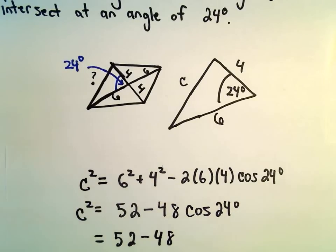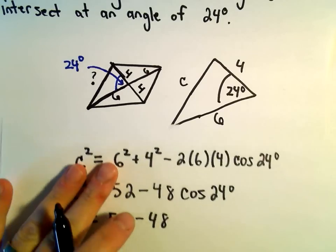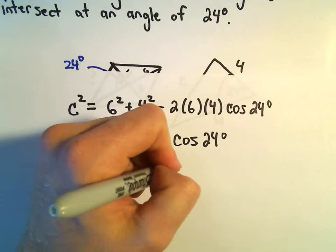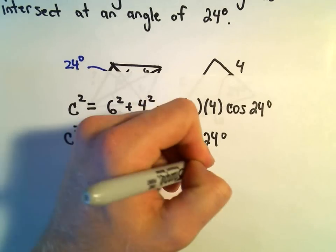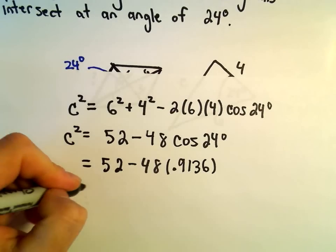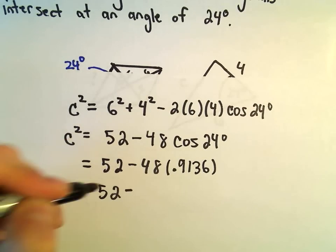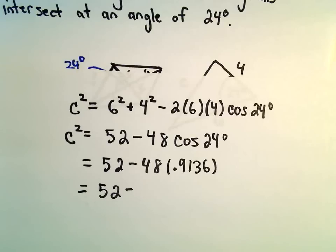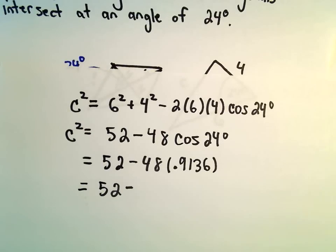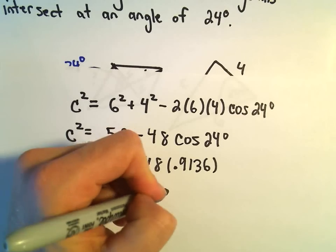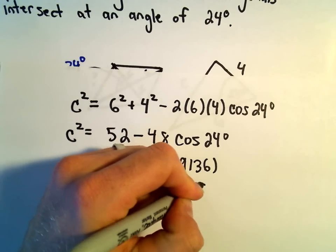Let's see, cosine of 24 degrees, I'm getting that to be roughly 0.9136. If we take 48 and multiply that by 0.9136, we'll get 43.8528.